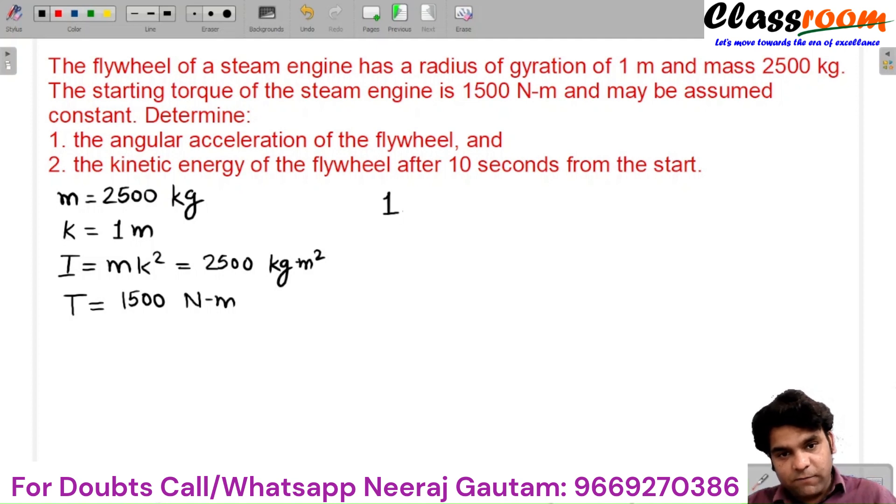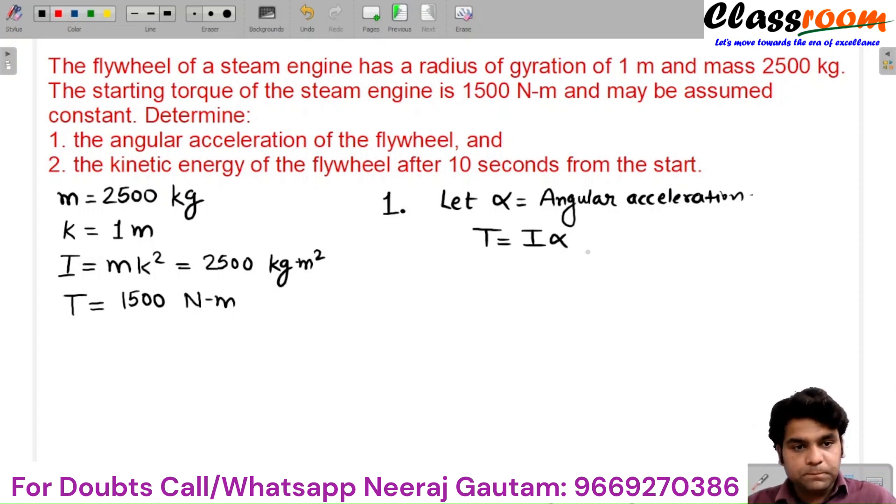First, we are solving for the angular acceleration. Let α be angular acceleration. We know that the starting torque equals I times α. Simply, α equals torque divided by I: 1500 / 2500 = 0.6 radians per second squared.